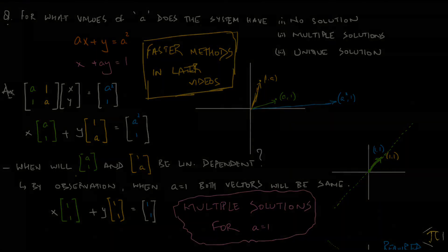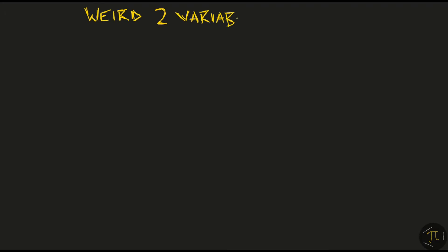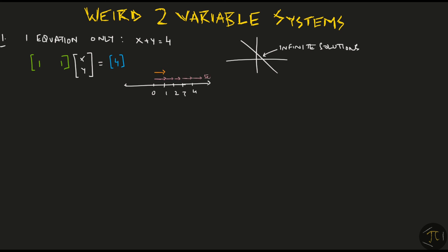Now that we've looked at the standard two variable systems, let me talk about some weird systems. What if you have one equation in two variables? We've already seen that the row picture says we have infinite solutions, but let's see the column picture now. The vectors are now one-dimensional, both are just one in this case. As an example, you can take 5 of the first vector and minus 1 of the second to reach to the output of 4, and so there are infinite solutions to this system.